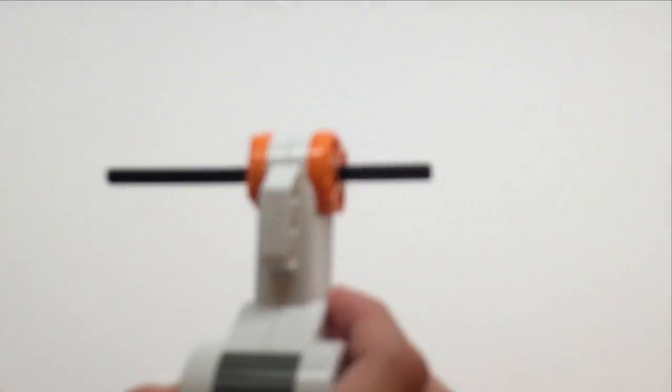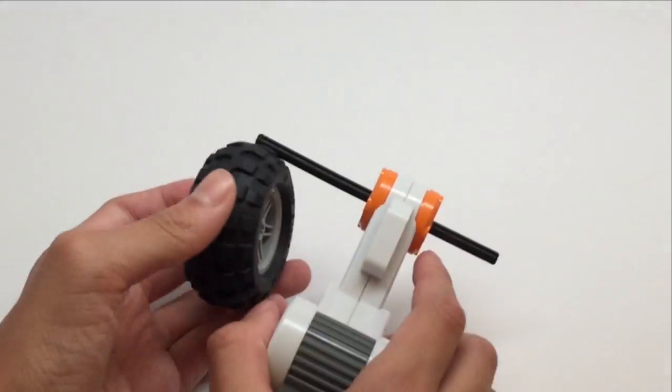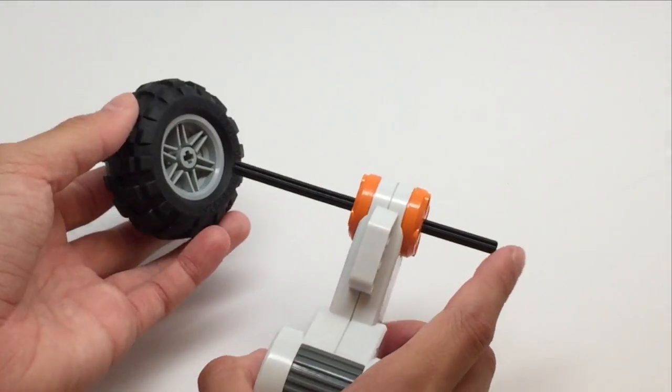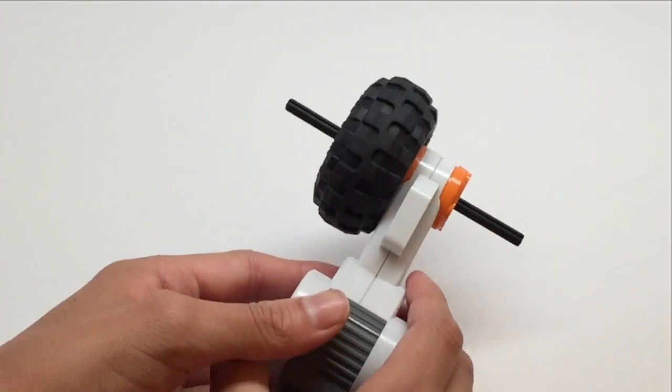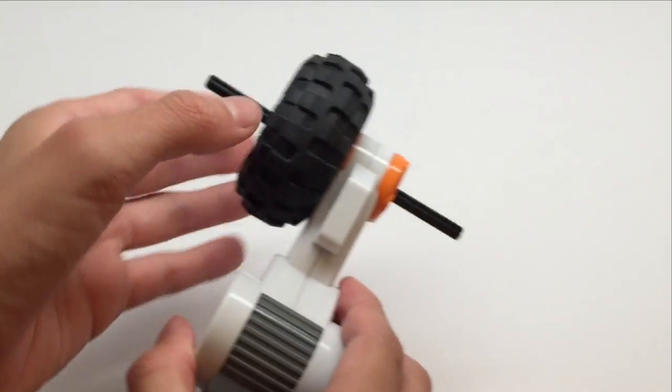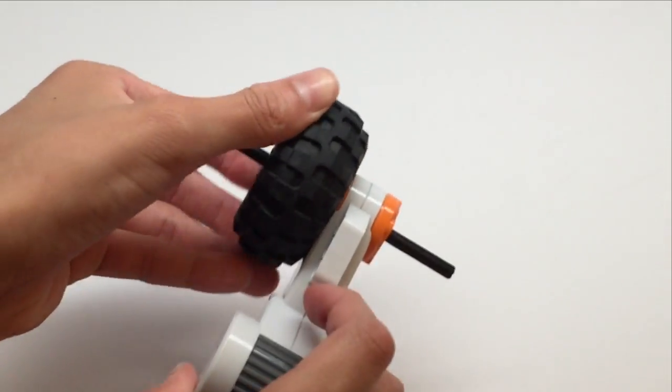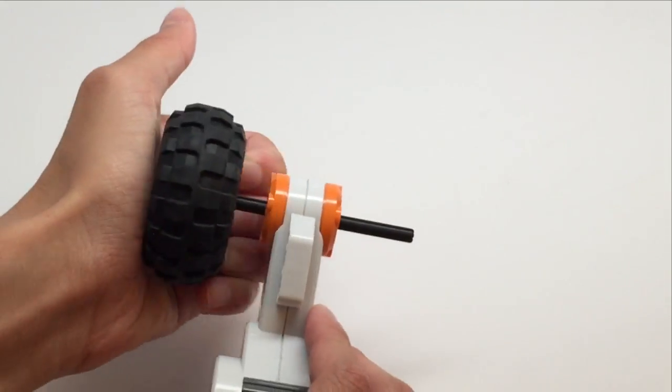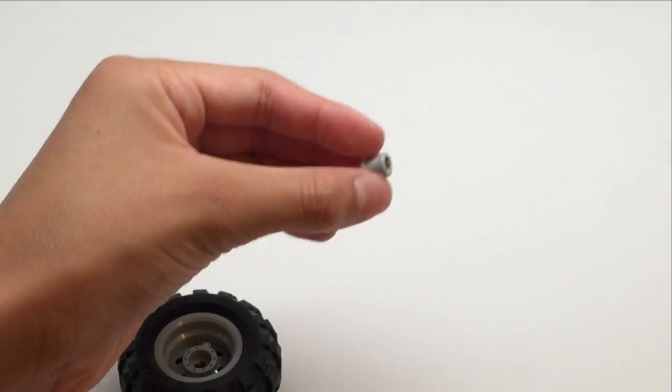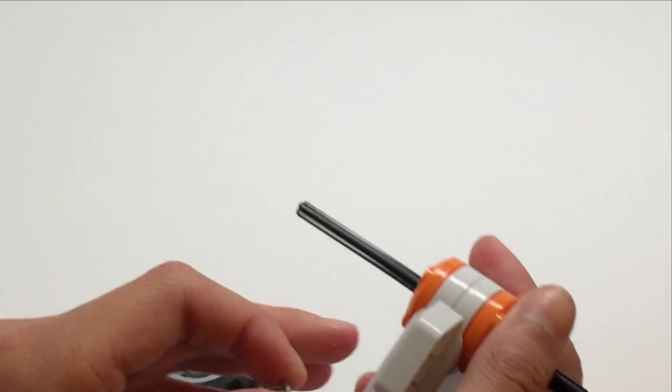I see this a lot, especially with some rookie teams. What happens is they take a wheel and they just stick it on an axle right next to the motor. If you see what happens here, the tire will rub against the actual motor, so this is definitely not good. The wheel's also a little bit tilted.